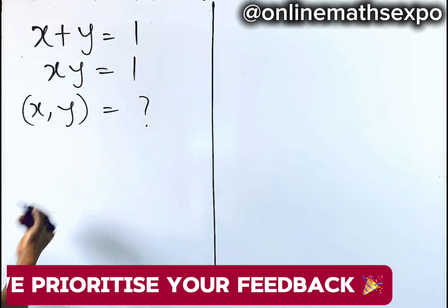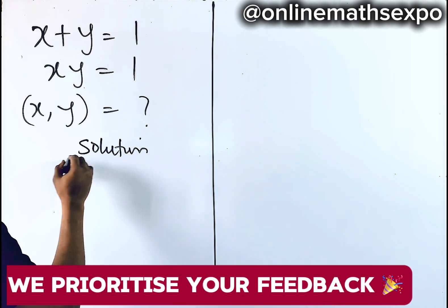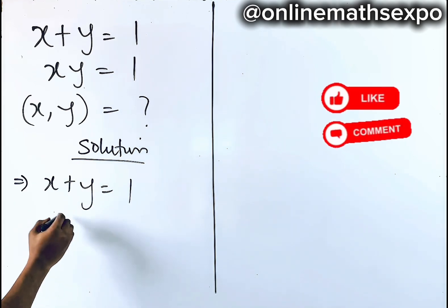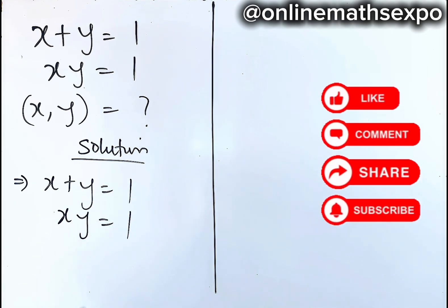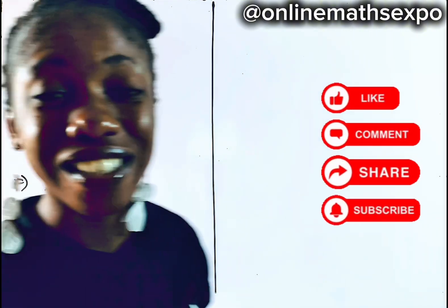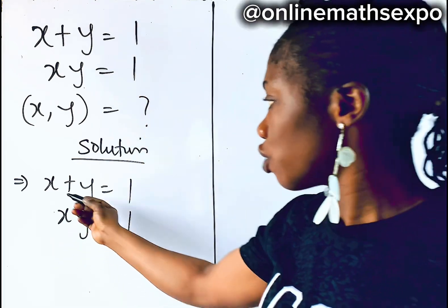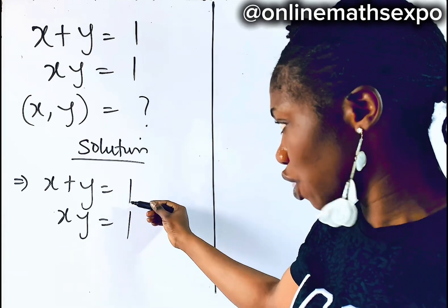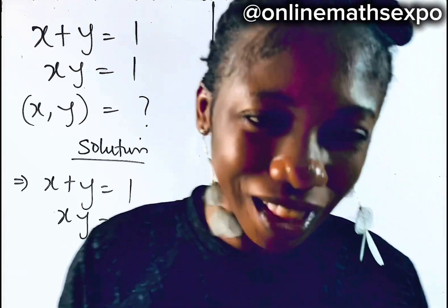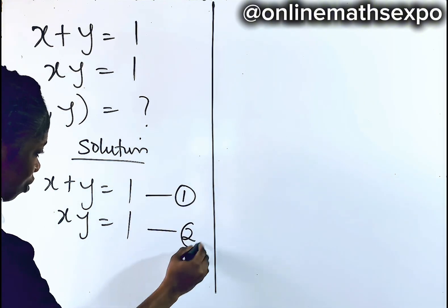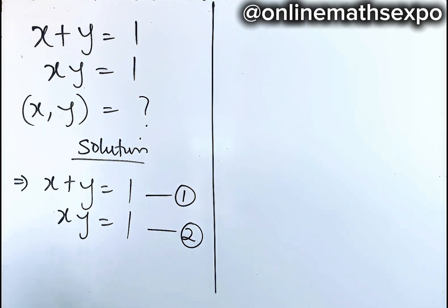Let's begin with the solution. We have x plus y is equal to 1, and x times y is equal to 1. When you have this kind of equations, this is what we call a system of equations, because we have two variables, x and y, to look out for, and we have two equations.